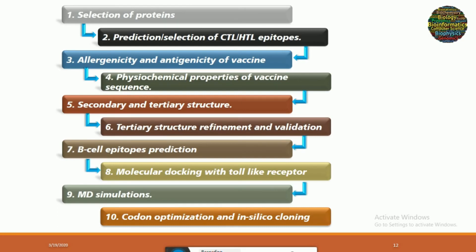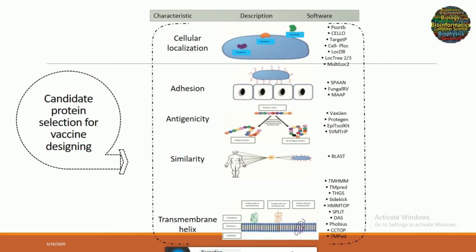Then we predict the B-cell epitopes for that vaccine, and then we move on to molecular docking of the vaccine structure with the Toll-like receptor. Then we perform molecular dynamics simulations that evaluate the stability of the molecular docking complex of the Toll-like receptor and the vaccine. After all these measurements and parameters, the vaccine is then reverse translated, restriction sites are added to both ends of this reverse translated sequence, and then this is cloned using software that we will discuss in our coming lectures.